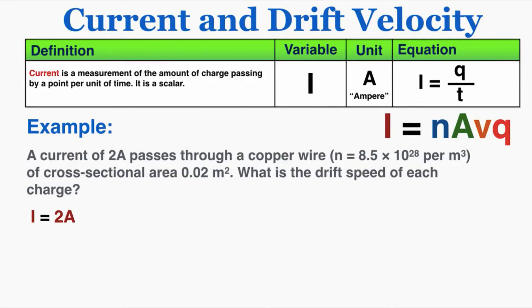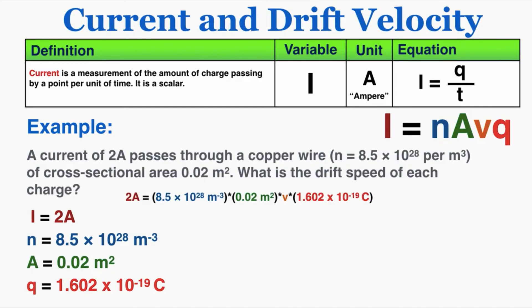So plugging this into my equation, I know the current, I know the number of electrons per meter cubed, I know the area, the cross-sectional area, and I know the charge of one electron is that elementary charge. Plugging these in to solve for v, the drift speed, the drift velocity, gets me a drift velocity of 7.3 times 10 to the negative 9th meters per second. So that's how you would use the second equation for current.